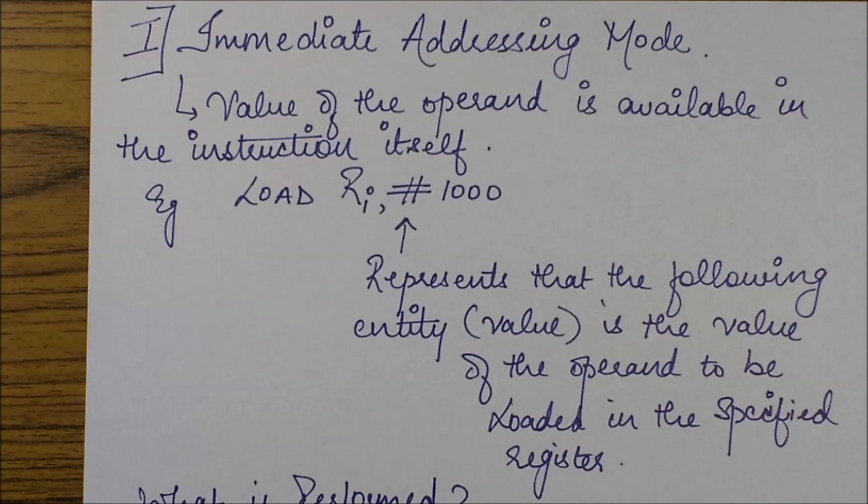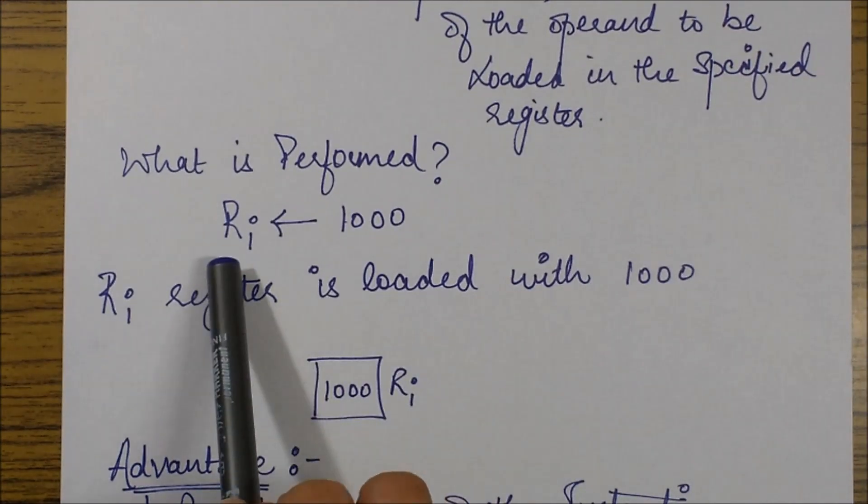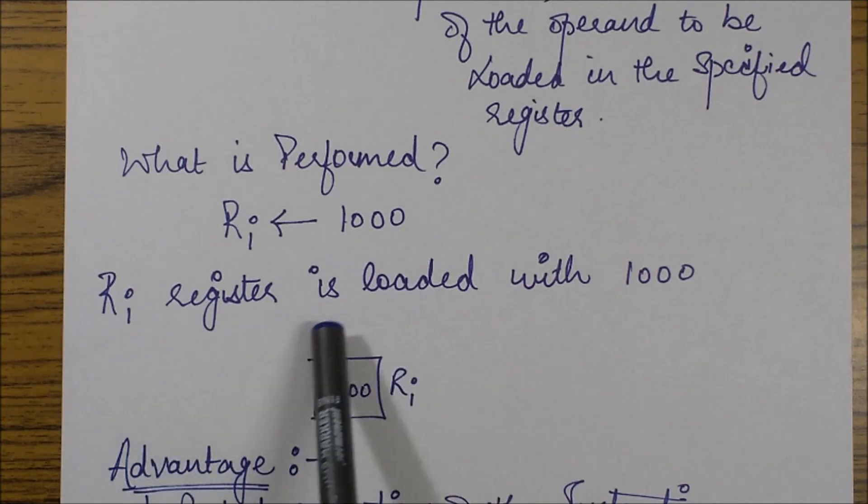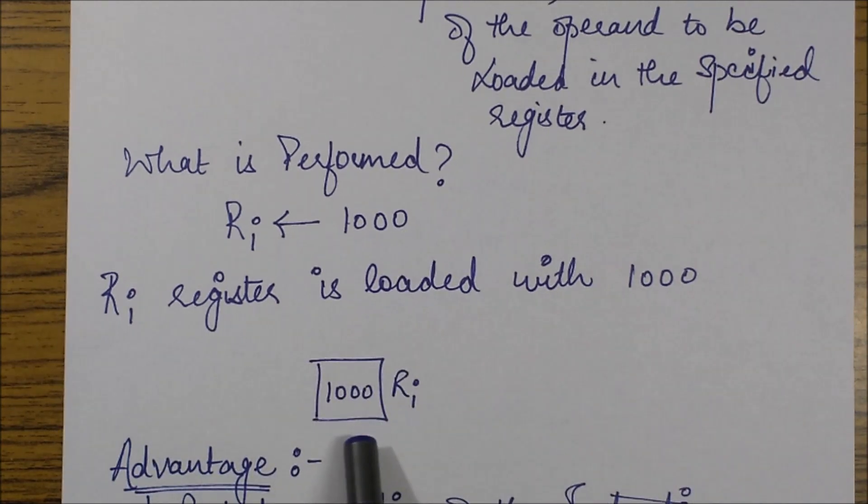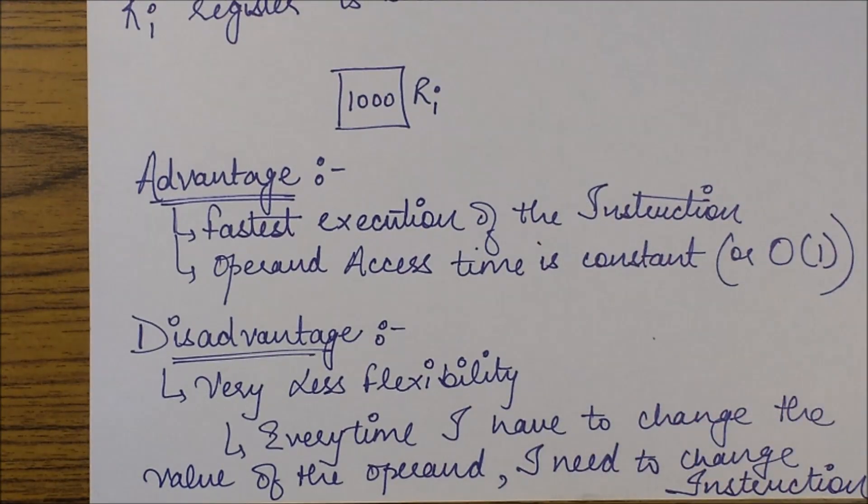Which in this case is Ri. So what is done in this case is Ri register is directly loaded with 1000 and this is how it looks. Advantage here is that it is the fastest execution of the instruction and the operand access time in this case is constant because we do not need to fetch the operand from any other memory location or from any other register - it is directly available in the instruction itself.